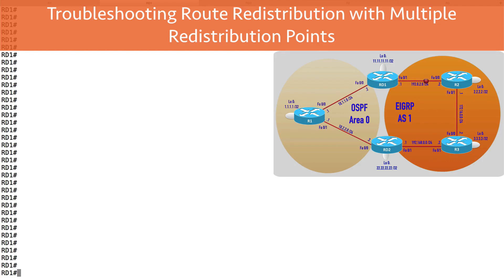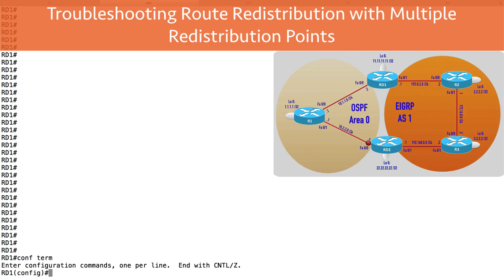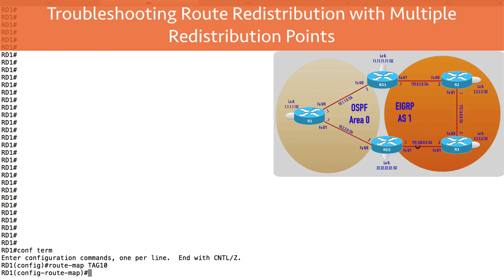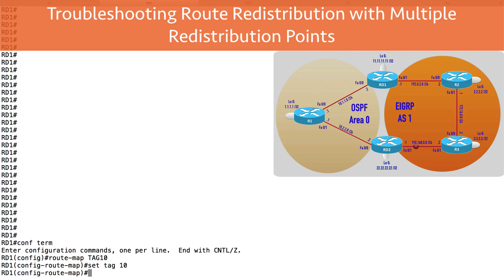Let's go to a live interface and configure these tags. We're on router RD1, and we want to say that if we're redistributing a route from EIGRP into OSPF, we want to give it a tag of 10, which we can do with a route map. Let's go into global configuration mode and create a route map. I'll say route-map tag10. I don't need to specify permit or a sequence number since the default is permit and I'm only giving one instruction: set tag 10. That's the first of our two route maps.